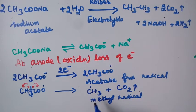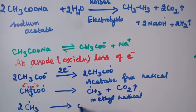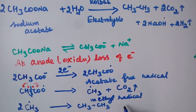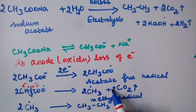The next step is that the methyl radicals dimerize — they join together to form ethane. Two molecules of CH3• combine, and the two unpaired electrons form a bond to give CH3CH3, which is ethane. So at the anode we get carbon dioxide gas and ethane. Since we are taking two molecules throughout, we write a factor of two everywhere.